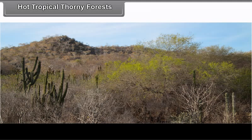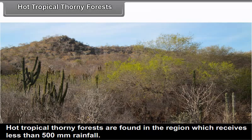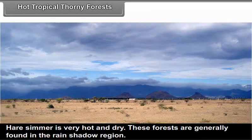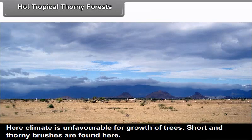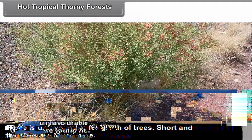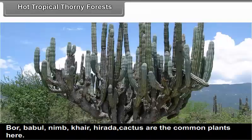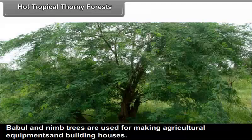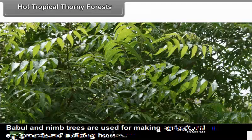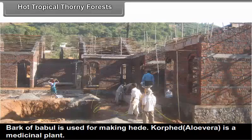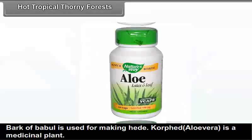Hot tropical thorny forests are found in regions which receive less than 500 mm rainfall. Here summer is very hot and dry. These forests are generally found in the rain shadow region where the climate is very unfavorable for growth of trees. Short and thorny brushes are found here. Bor, Babul, Neem, Khair, Hirda and Cactus are the common plants found here. Babul and Neem trees are used for making agricultural equipment and building houses. Bark of Babul is used for making hide. Aloe Vera is a medicinal plant.